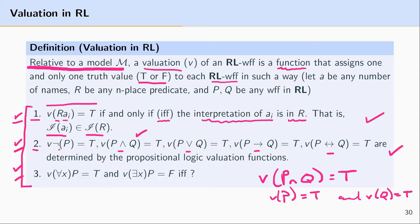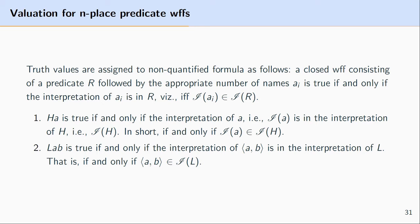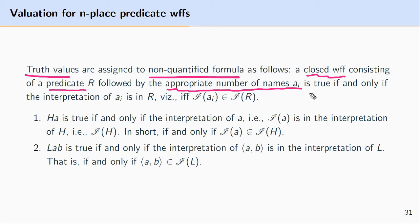Our definition is partial because we won't specify yet how the truth values of quantified formulas are determined — that's left for a later video. Let's look at the first valuation rule again: how to determine the truth value of n-place predicates followed by n names. We have a closed well-formed formula consisting of predicate R followed by an appropriate number of names a, and this formula is true if and only if the interpretation of a is in the interpretation of R.